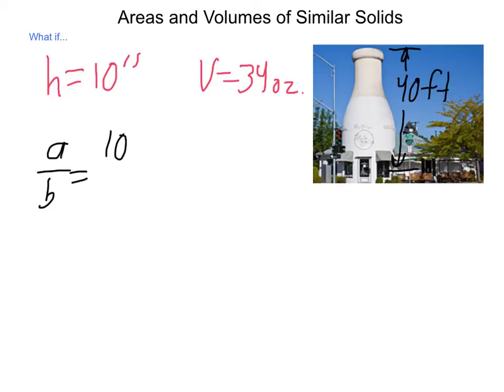If a normal milk bottle has a height of 10 inches and a corresponding volume of 34 ounces of milk, and this milk bottle that is shown in the diagram has a height of 40 feet, if these are proportionate, if they are similar milk bottles, what would be the theoretical capacity of milk to be contained inside of this restaurant? Well, in order to do this, we're going to have to simply figure it out into proportionate reasoning. We start out with our A to B ratio, which is 10 inches to 480 inches if we convert 40 feet.